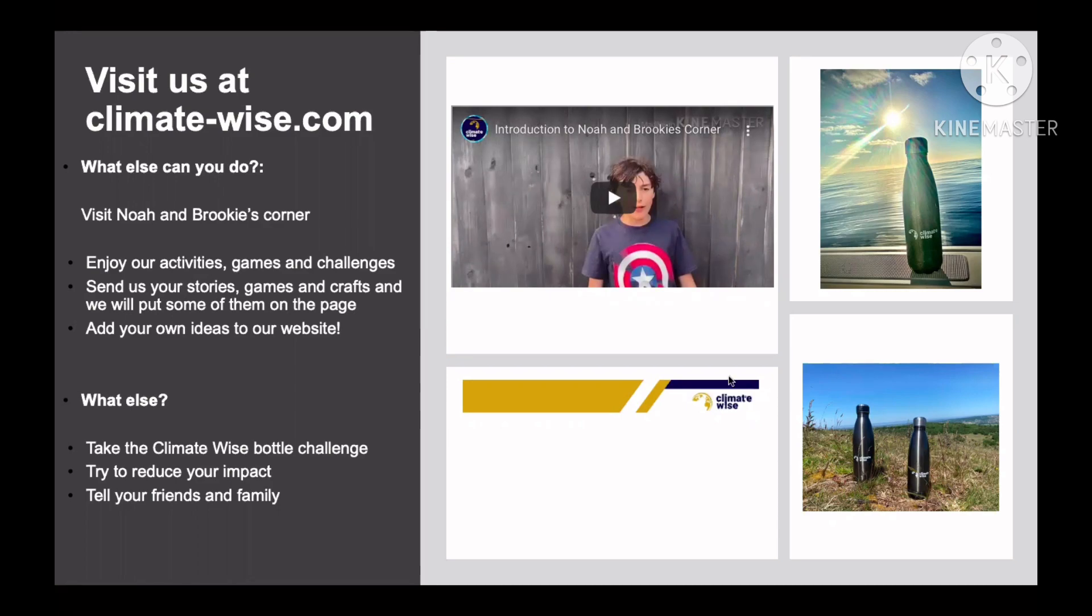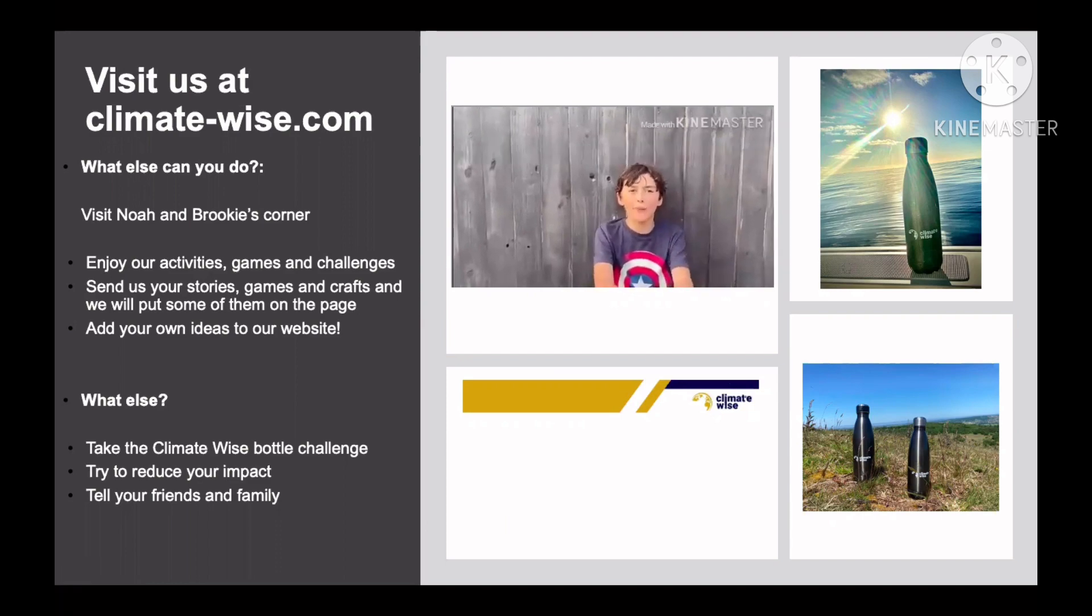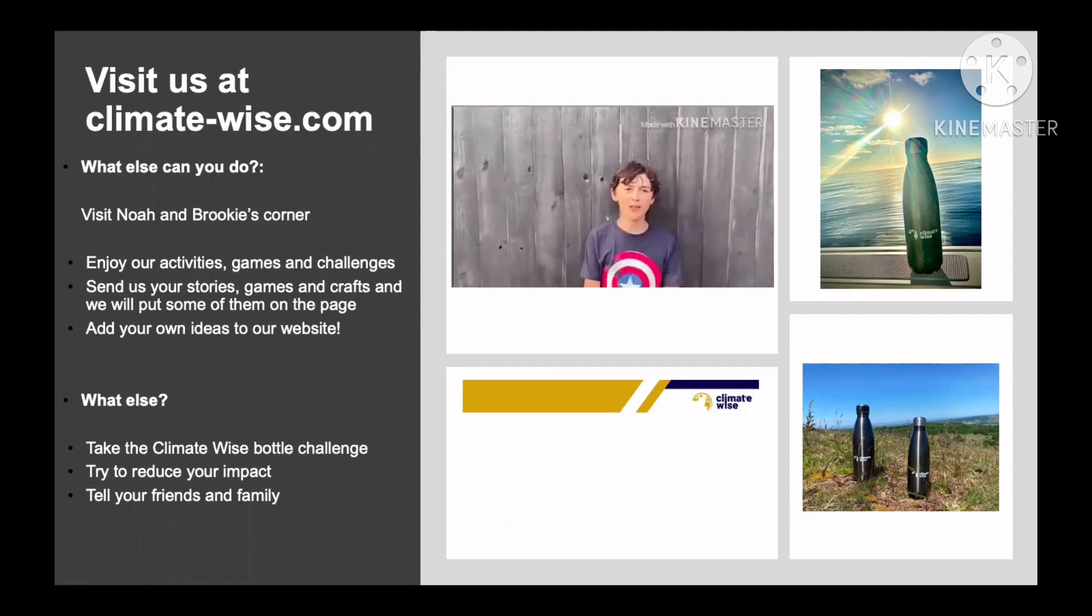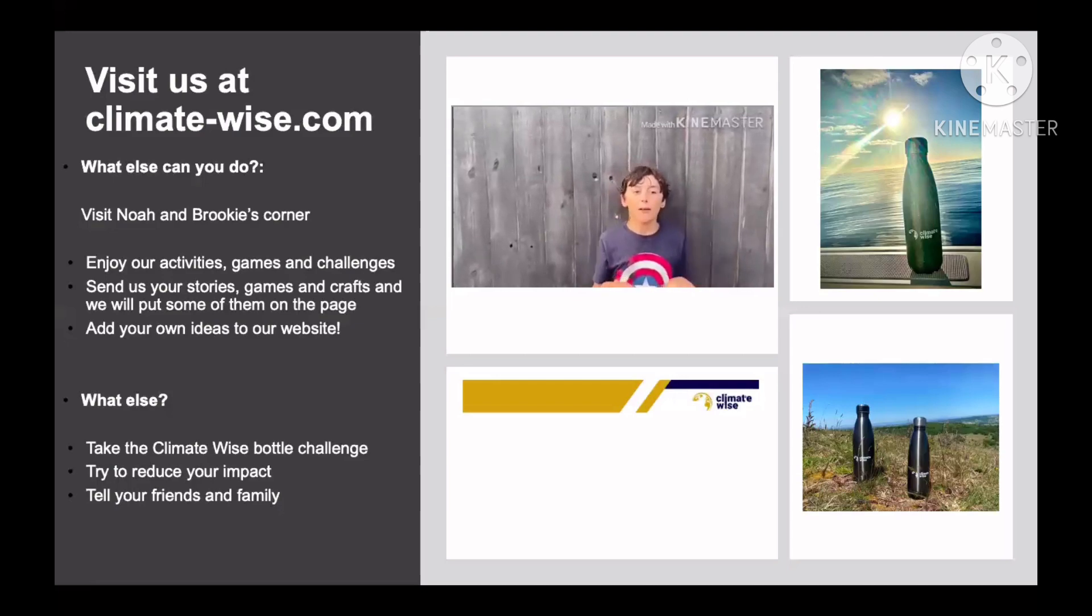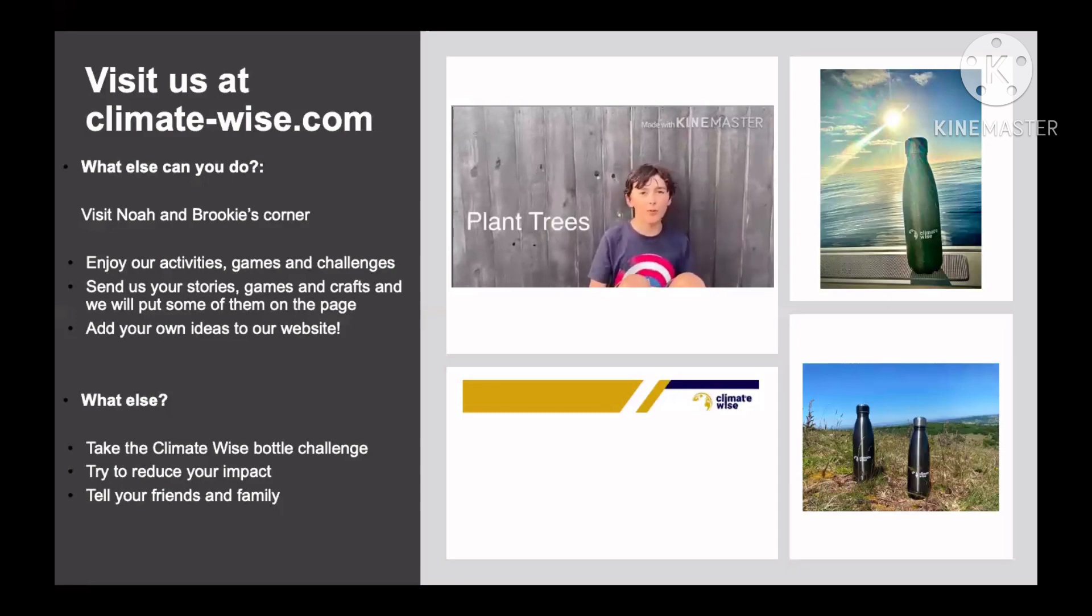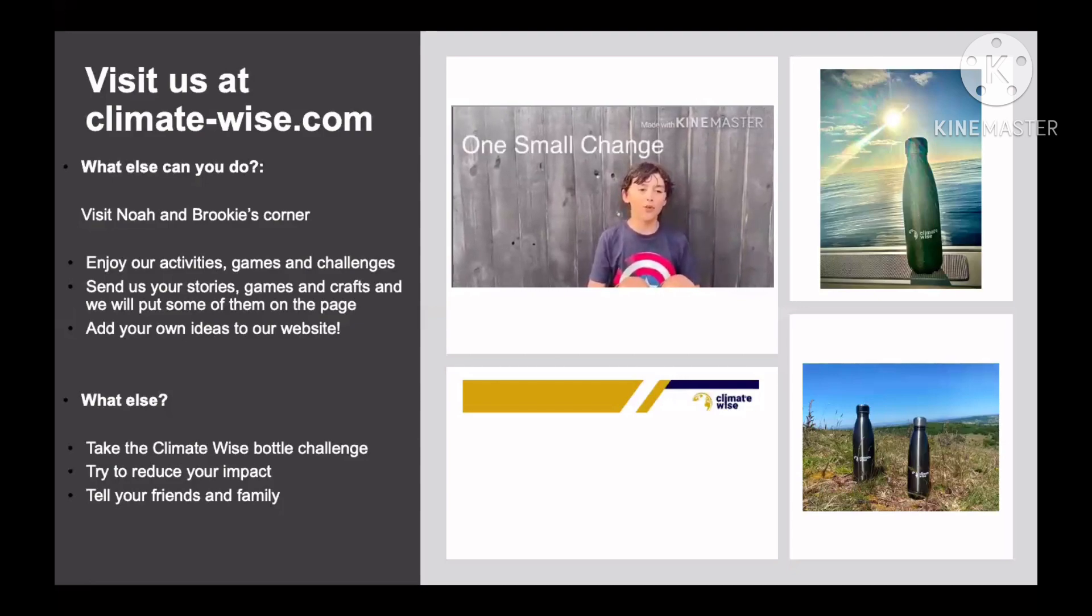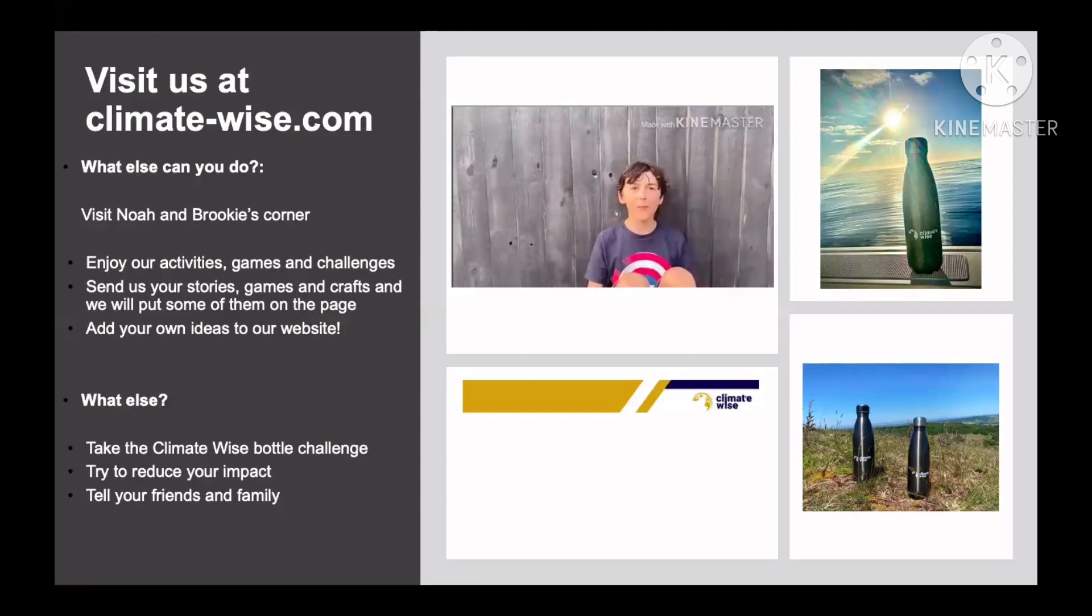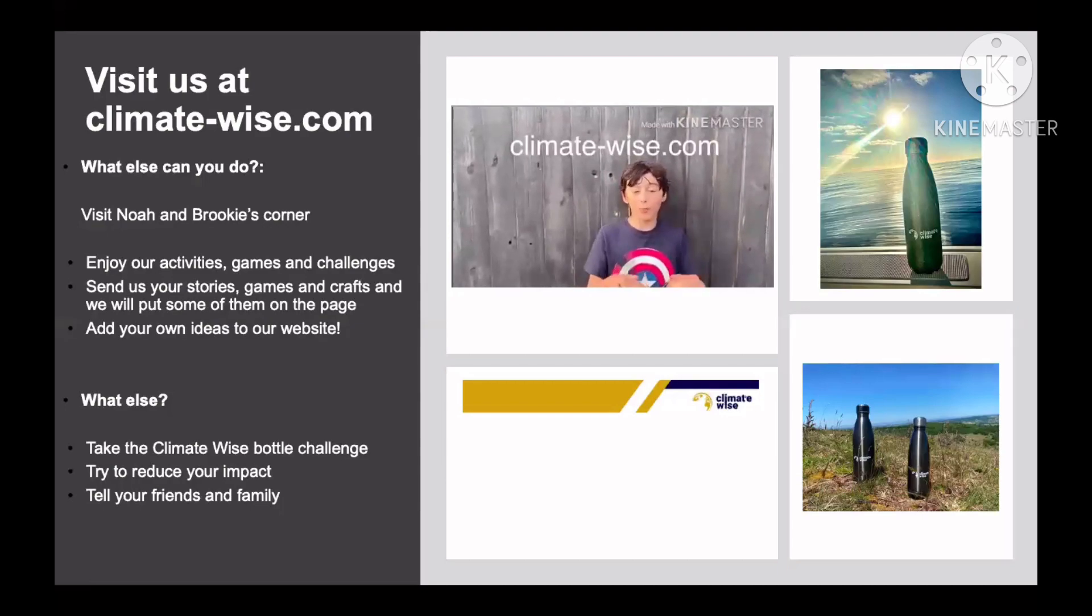Here's Noah with some ideas. Climate change, we all know it's going to happen no matter what, and we can't do anything to stop it, but we can slow it down. Climate change usually happens slowly, but thanks to us it's happening faster. So here's a few things you can do to slow it down. You can recycle plastic bottles into bird feeders, you could plant a few more trees. It's up to you on what to do. Just remember that one small change can make a massive difference. Let's join the fight against climate change. To find out more, go to Noah and Brookie's corner on climatewise.com where you can also play a few games.